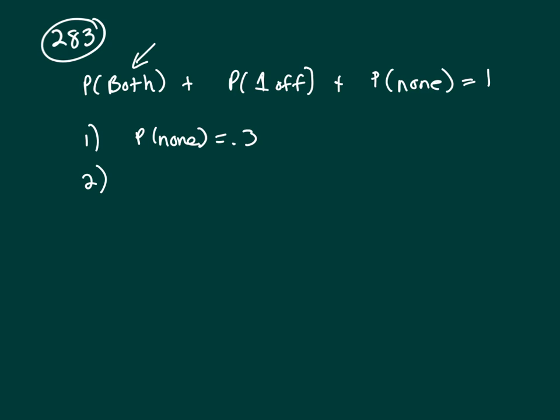Now forget clue one and let's look at clue two. The probability that she will get a job offer from exactly one. So probability of one offer is point five. So I could plug in point five here but I don't know about both or none so I can't solve it.